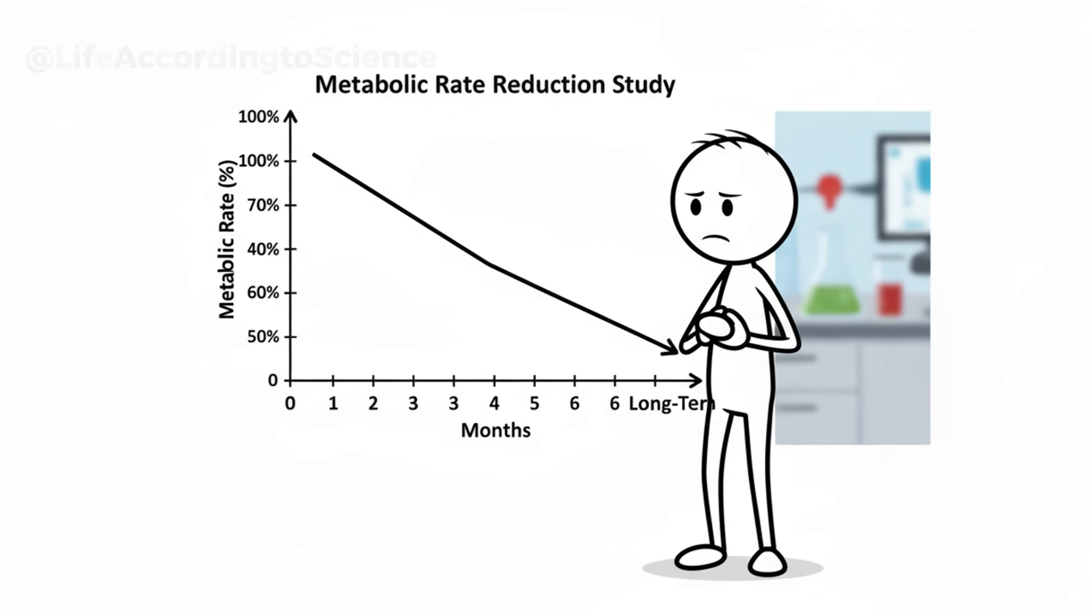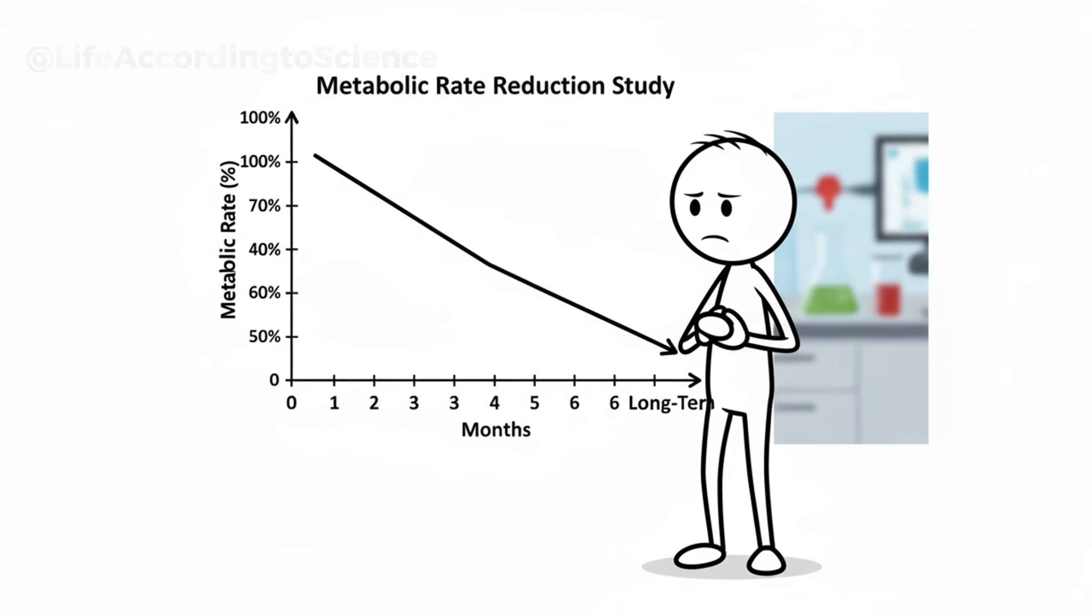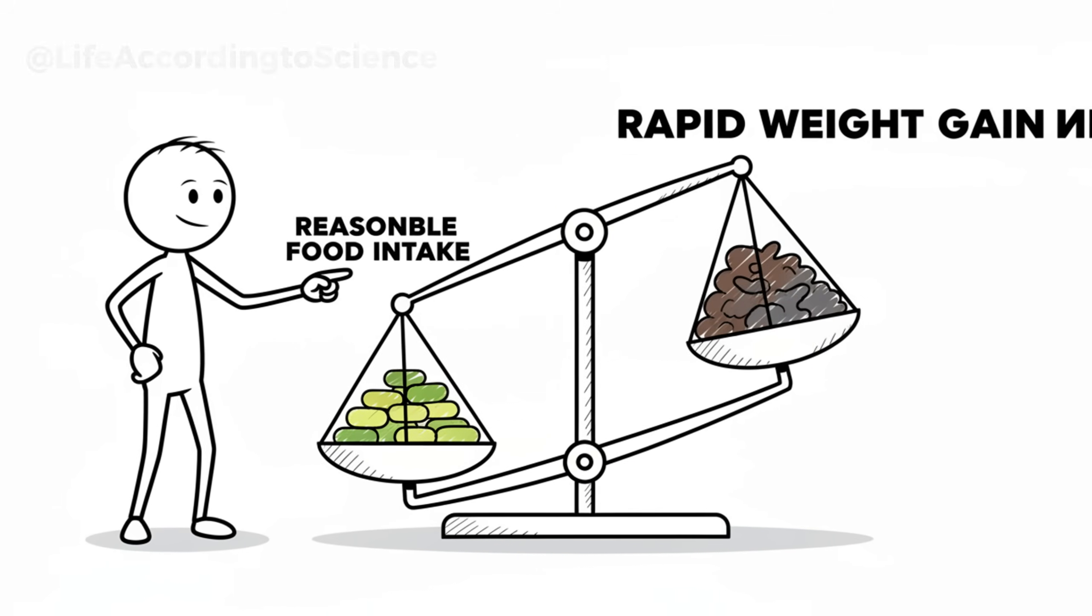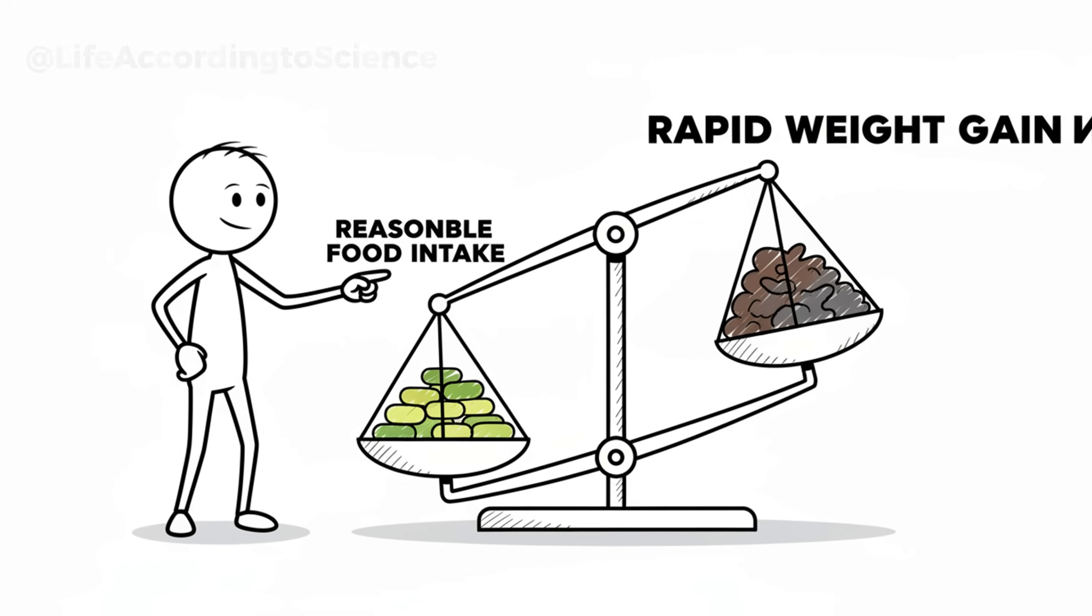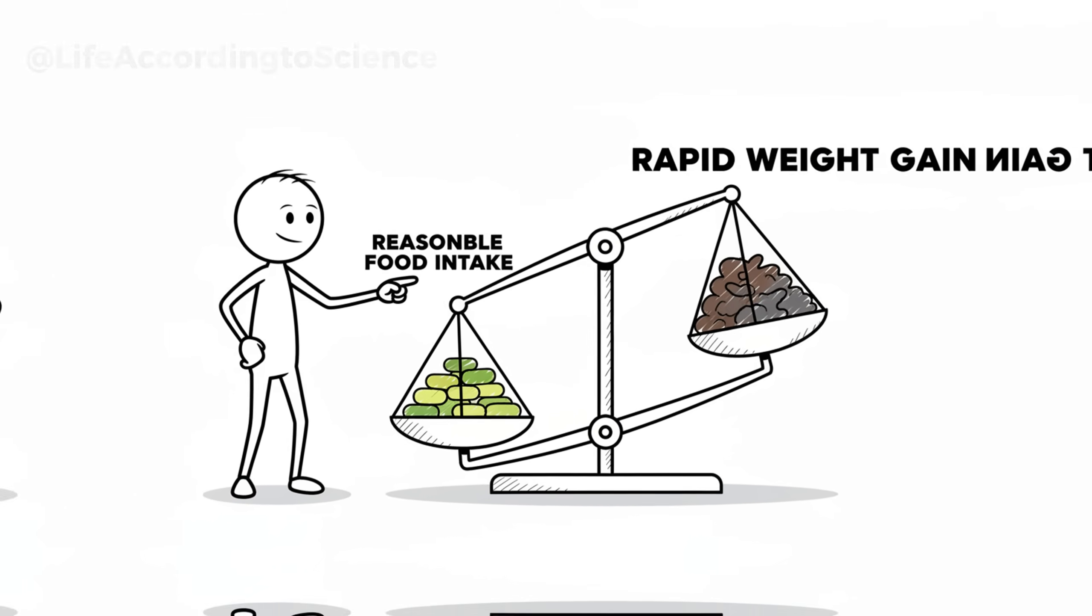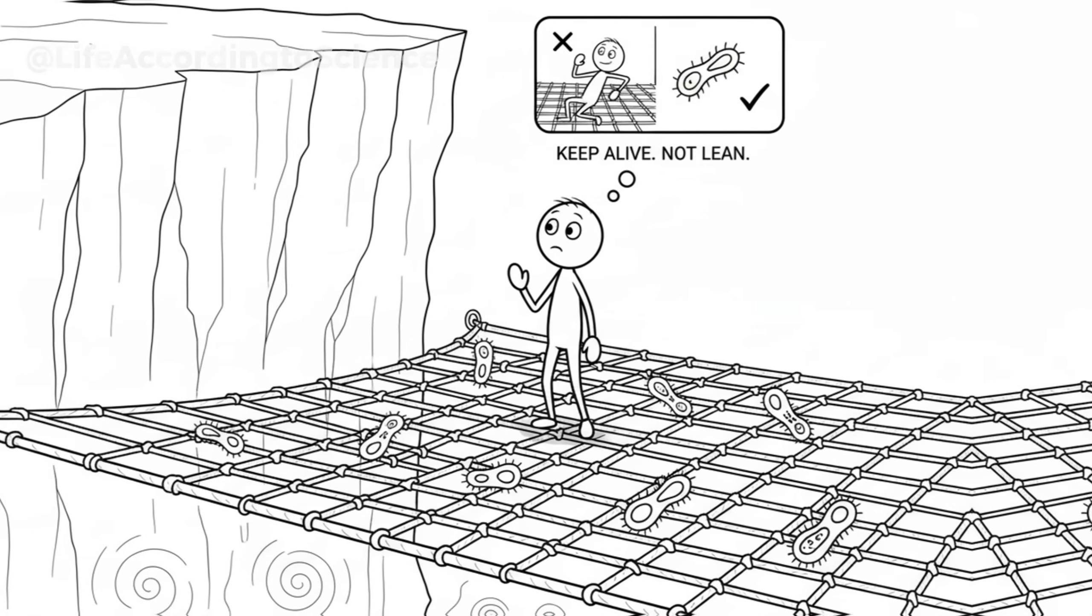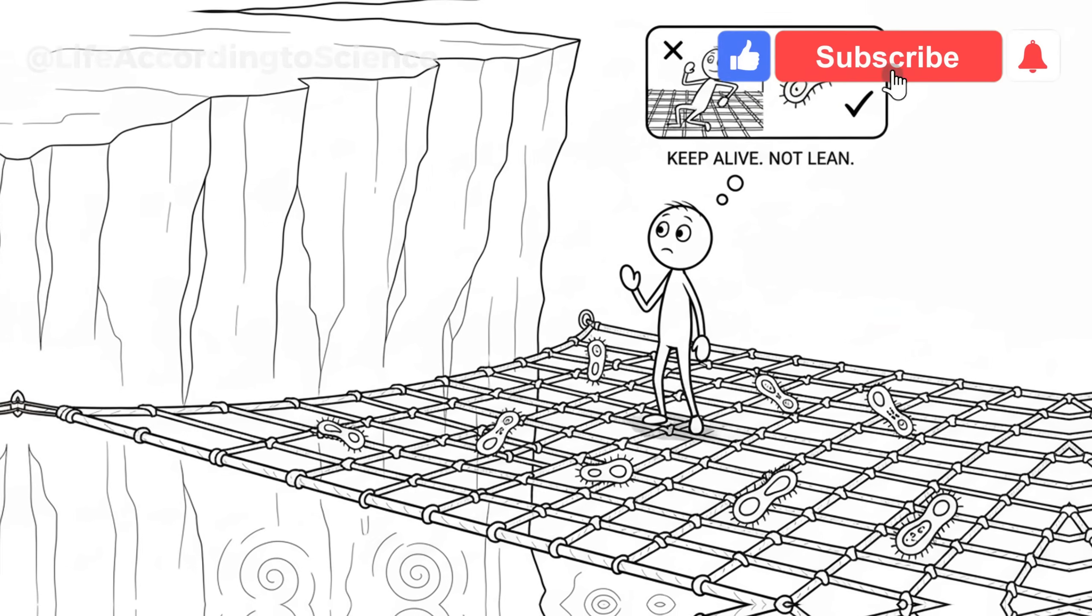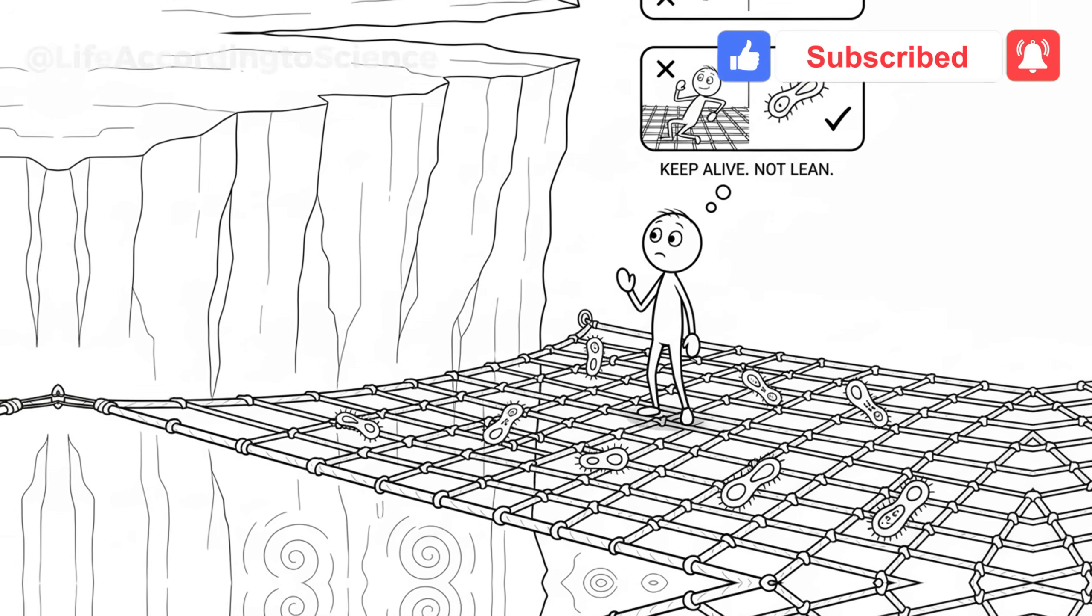Research from the National Institutes of Health found that after extreme dieting, people's metabolic rates can drop by up to 15% and sometimes stay that way for years. The result? You eat like before, but gain weight more easily. It's a cruel biological safety net meant to keep you alive, not lean.